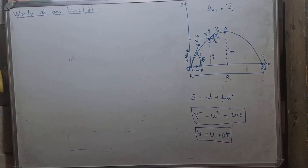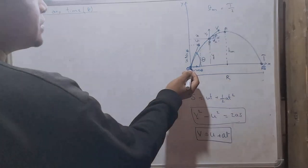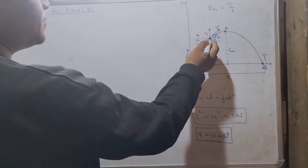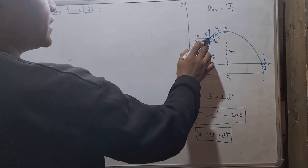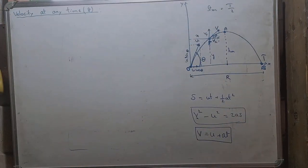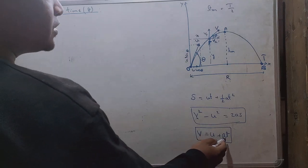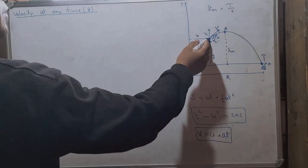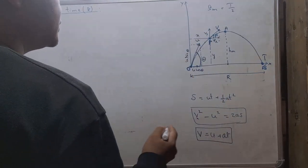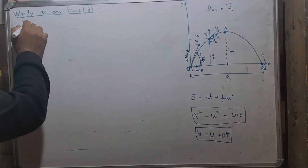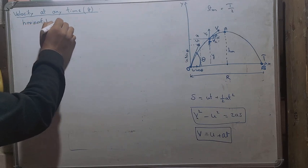Next, velocity at any time t. Let us find the velocity of a projectile at any instance of time t. Suppose we want to calculate the velocity at point P. The magnitude of the velocity is v, and its direction is always tangent to the path at that point. At point P, there are two rectangular components of velocity: one is vx (horizontal) and another is vy (vertical).